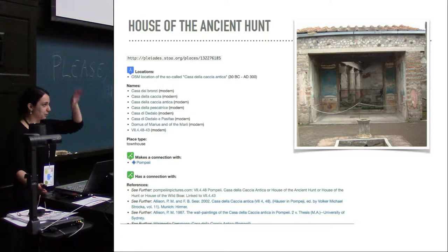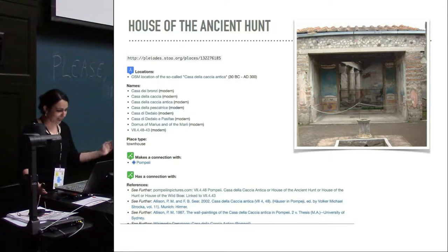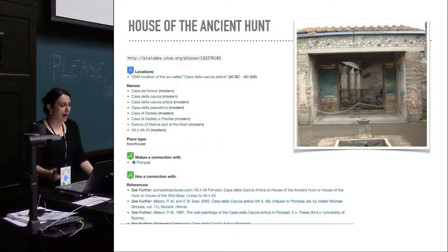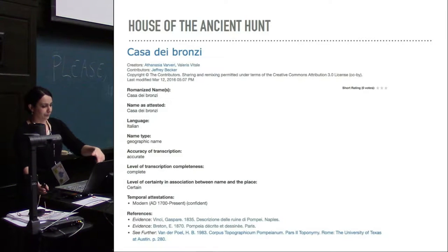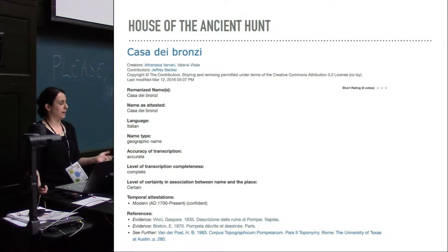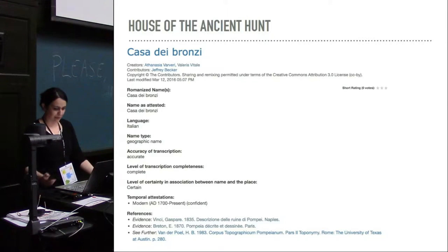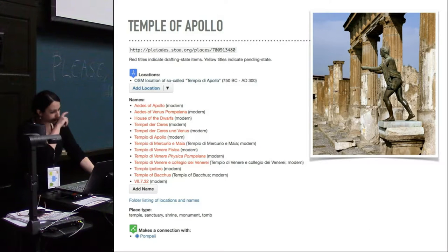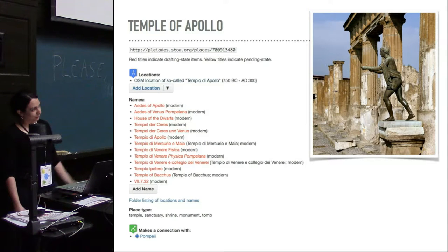This is another example of how many names — and this is not even one of the worst ones — a single house can have. For each name we can then link bibliography, and because many of these old documents are online and out of copyright, you can link directly to the source on some online repository. This is the Temple of Apollo — if you were wondering where the House of the Wharf is, it is the Temple of Apollo.